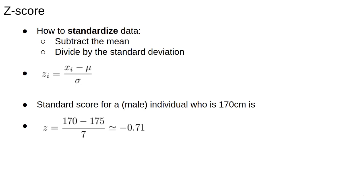of z equals 170 minus 175 over 7, which is minus 0.71. This z-score will be the same regardless of if we change their units to feet or inches or miles.